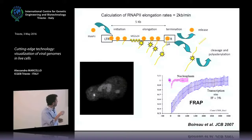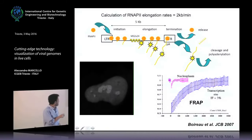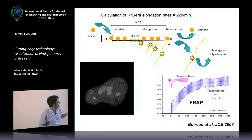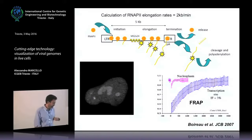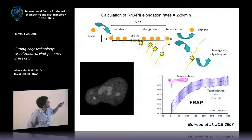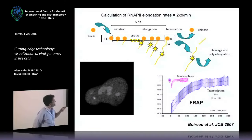We then turned to FRAP to look at the recovery of the signal. You can see the nucleus and the spot corresponding to the tandem array. The spot was bleached and then recovered. From these recovery curves, we could determine the velocity of the polymerase on the transcription site of the tandem array. The calculation of the elongation rate came out at around 2 kilobases per minute — a quantitative output of our analysis.